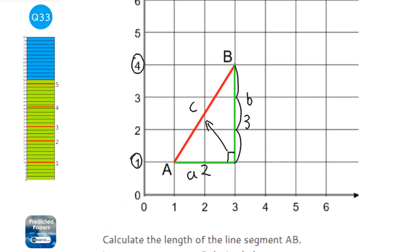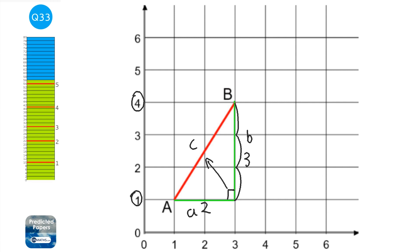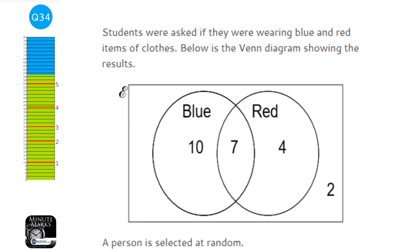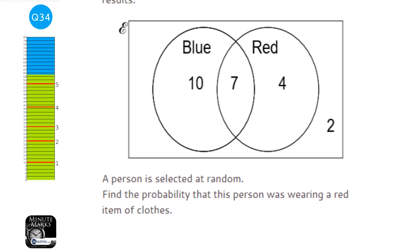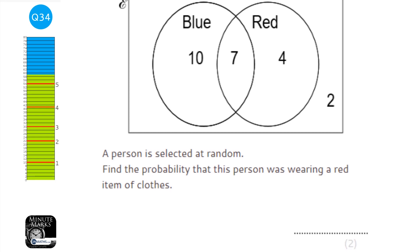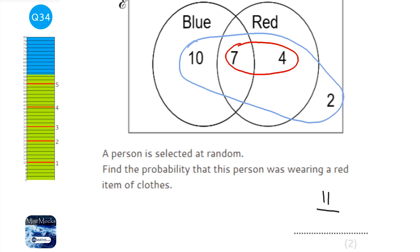We're given a Venn diagram of clothes people are wearing, split between blue and red. We need the probability a person is wearing a red item. Red includes both 7 and 4, so 7 + 4 = 11. The total in the Venn diagram is 11 + 10 + 2 = 23. The probability is 11/23.